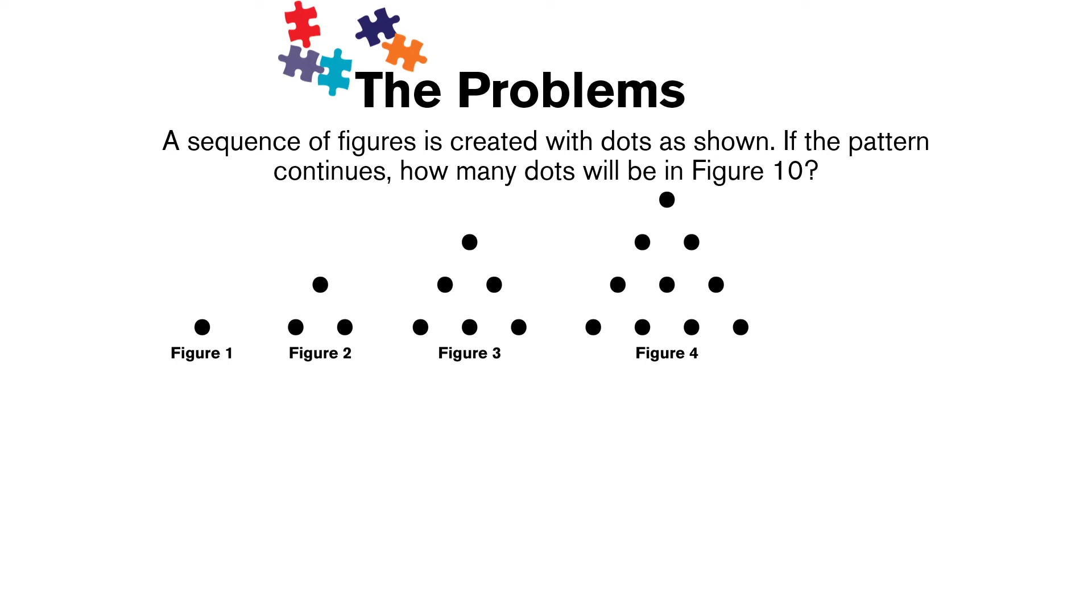So what you might have done to find figure 5 is draw out the next figure, and it would look something like this. If you counted up those dots, you would have got 15 dots for your answer. And that's a great way to do it.